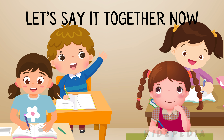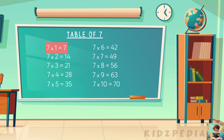Can we say it together now? 7 1s are 7. 7 2s are 14. 7 3s are 21. 7 4s are 28. 7 5s are 35. 7 6s are 42. 7 7s are 49. 7 8s are 56. 7 9s are 63. 7 10s are 70.